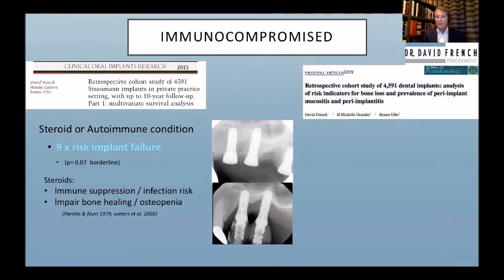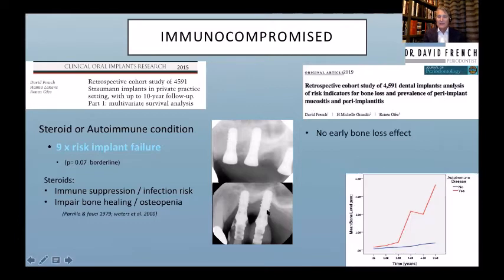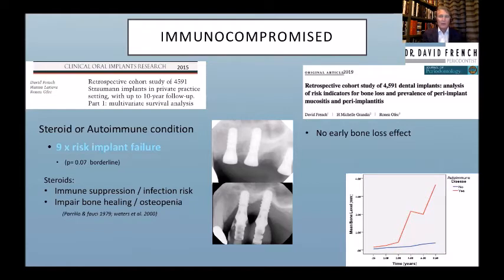Looking at the impact on peri-implantitis, when we first place the implant there's no effect — similar to smoking — but over time steroids or autoimmune conditions increase bone loss progressively. So if you wanted a recipe for high failure: a multi-implant case in a smoker with perio disease who is also immunocompromised — that's what you'd refer to your worst enemy.